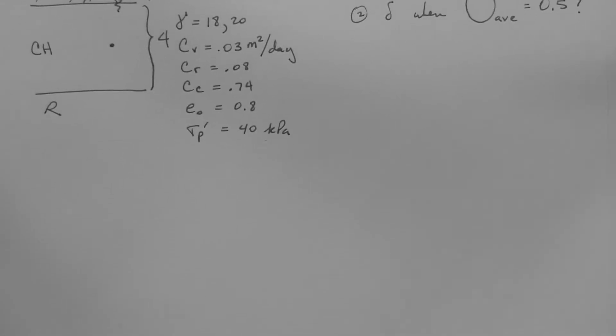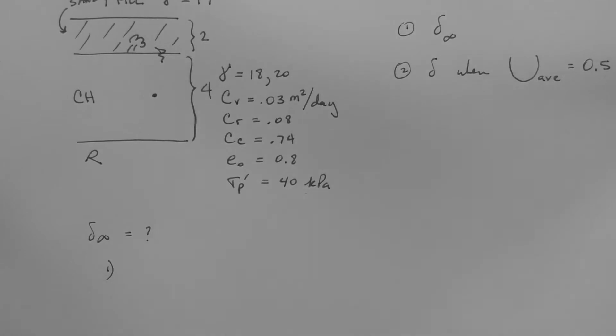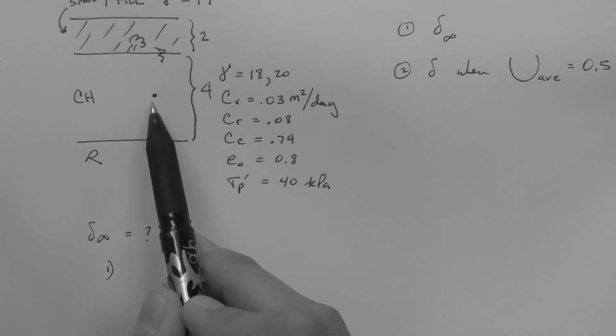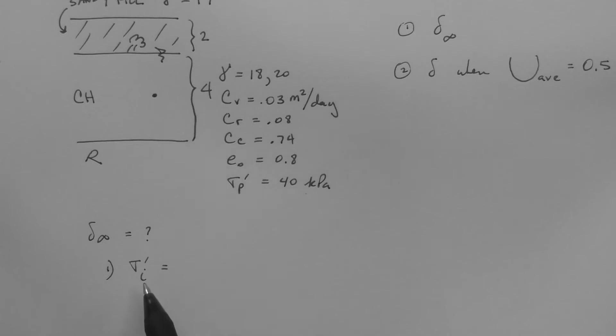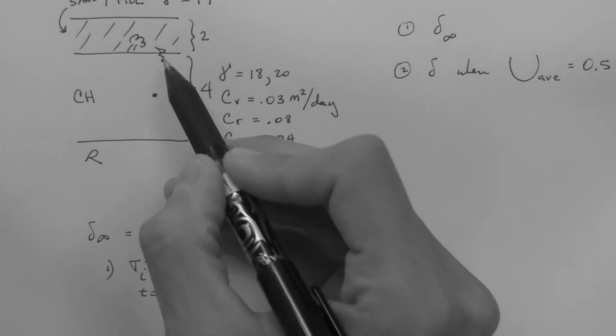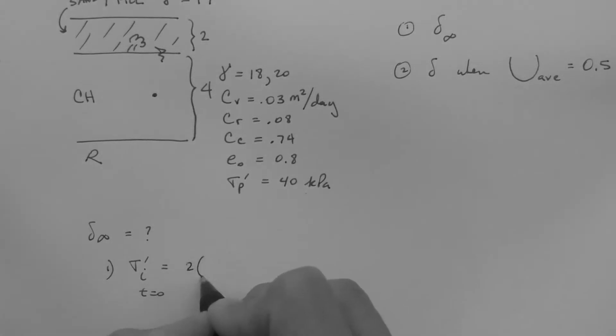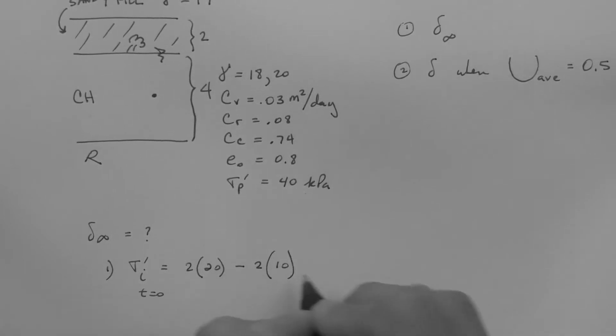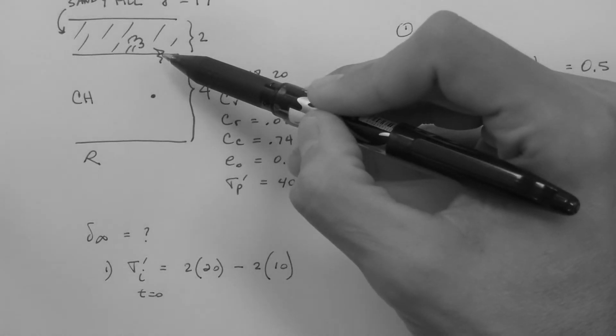Ultimate settlement. The first step is to determine the initial stress, that is, at time equals zero, at the point that represents the layer, which is the point in the middle of the layer. The effective stress initial, at time equals zero, is equal to 2 meters of saturated soil minus 2 meters of water, because the water table is right there.